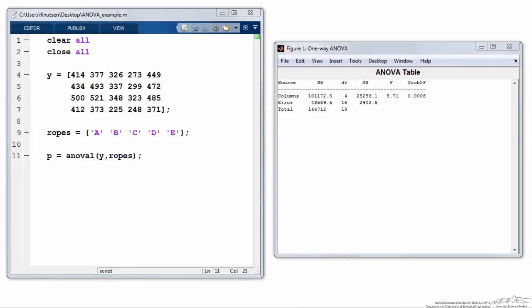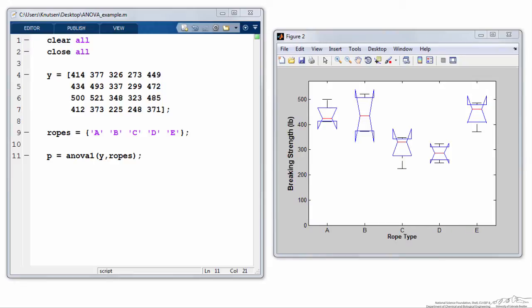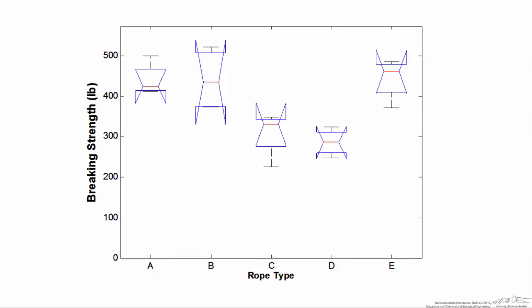In addition to the p-value, the function ANOVA1 will also return our analysis of variance table and a figure. This figure is a little bit difficult to interpret, but for each of the five ropes I've got a red value that represents the median value for each of the four measurements.